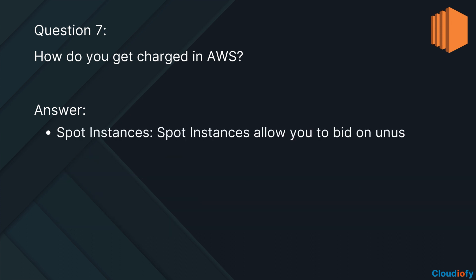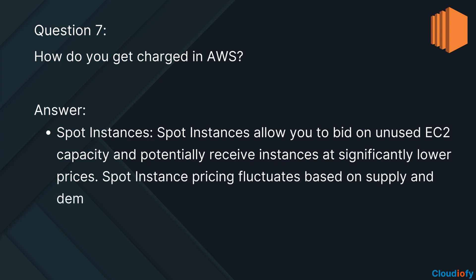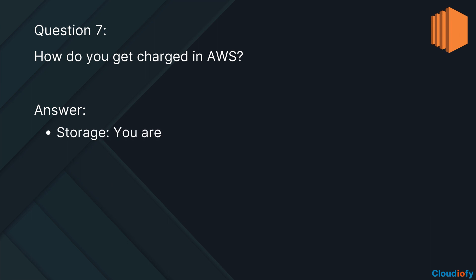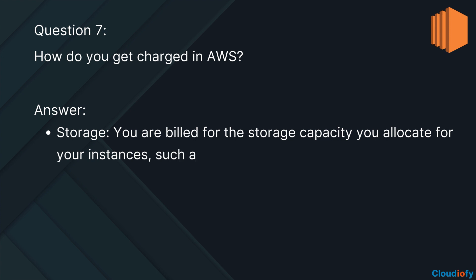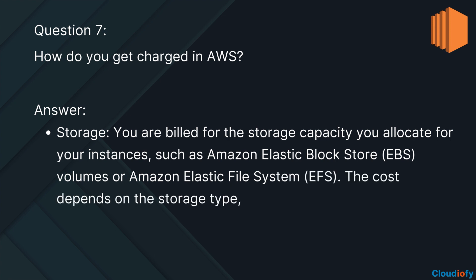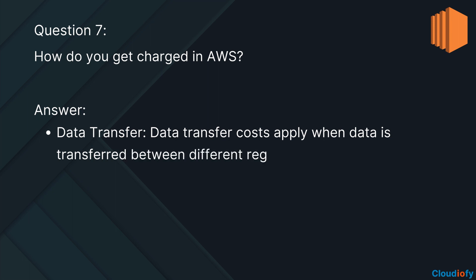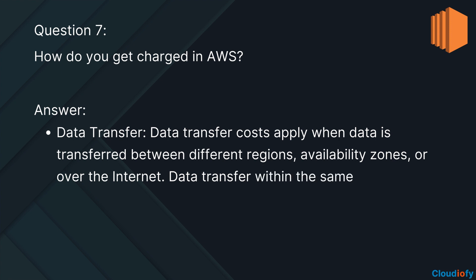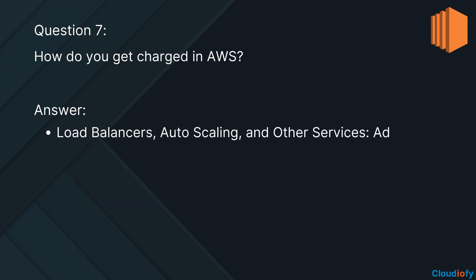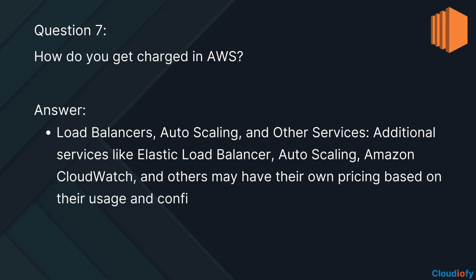Spot instances allow you to bid on unused EC2 capacity and potentially receive instances at significantly lower prices. Spot instance pricing fluctuates based on supply and demand, and your instances may be interrupted if the spot price exceeds your bid. Storage: you are billed for the storage capacity you allocate, such as Amazon Elastic Block Store (EBS) volumes or Amazon Elastic File System (EFS). Data transfer costs apply when data is transferred between different regions or availability zones, or over the internet; data transfer within the same AWS region or availability zone is usually free. Additional services like Elastic Load Balancer, Autoscaling, and Amazon CloudWatch may have their own pricing based on usage and configuration.